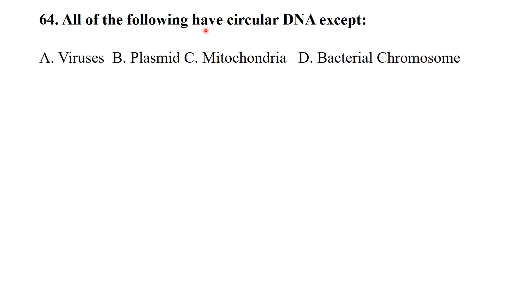Which of the following has circular DNA except - amongst these the best answer is viruses. Plasmids are circular, mitochondria are circular, bacterial chromosomes are mostly circular, so most viruses have circular genomes.